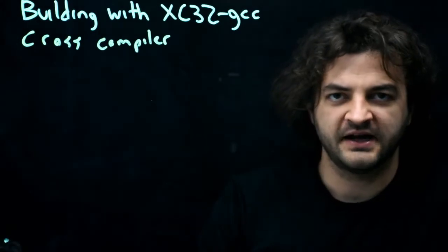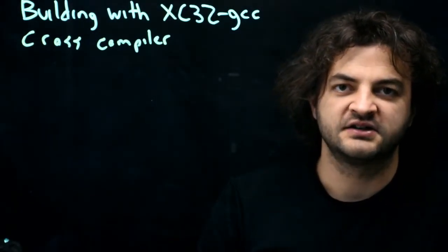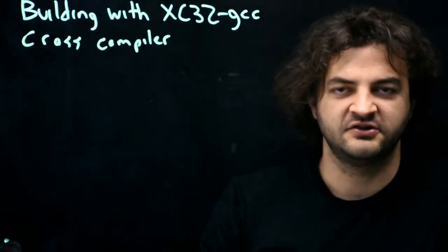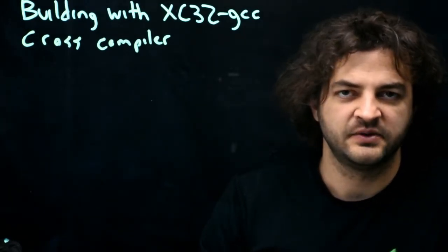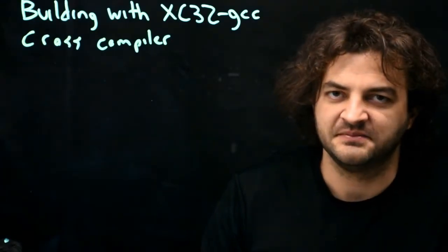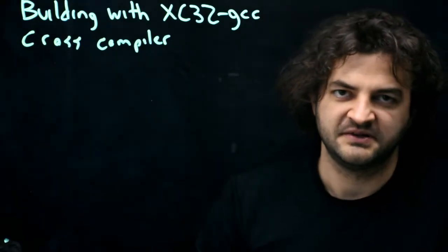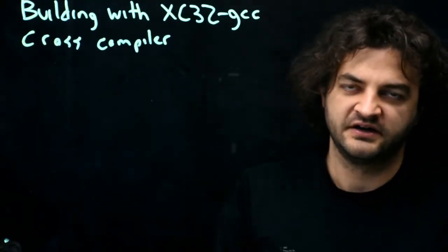Because we're still compiling the code on our computer, but we're compiling it to run on a different processor. So the executable we come up with in the end, we can't run on our computer because it's not a PIC32 MIPS-based CPU. So whenever you see something that says cross-compile, that just means using one computer to compile code to run on another.